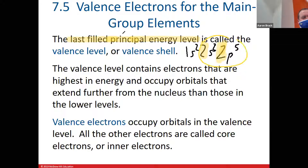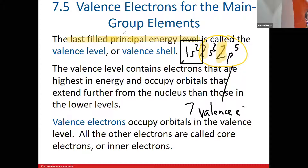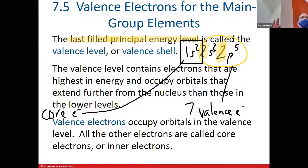In total, we would say there are seven valence electrons for fluorine. These other two electrons — the ones in the inner energy level, or in some cases inner energy levels — would be referred to as core electrons: electrons closest to the nucleus, shielded from the outside world by all the electrons out in front.